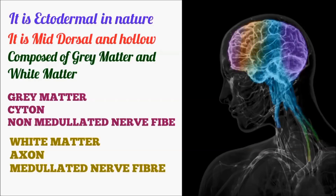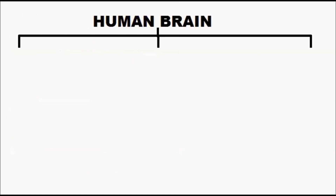The functional unit of neural structure is the neuron, covered by a myelin sheath. There are two types of neurons: myelinated and non-myelinated. The human brain has three parts: forebrain, midbrain, and hindbrain.